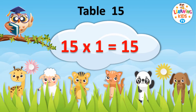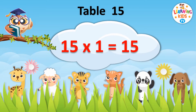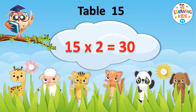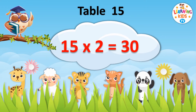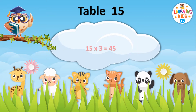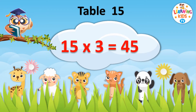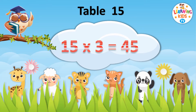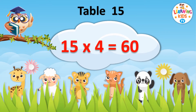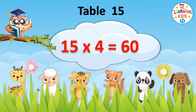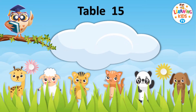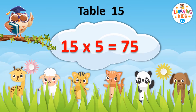Fifteen ones are fifteen. Fifteen twos are thirty. Fifteen threes are forty-five. Fifteen fours are sixty. Fifteen fives are seventy-five.